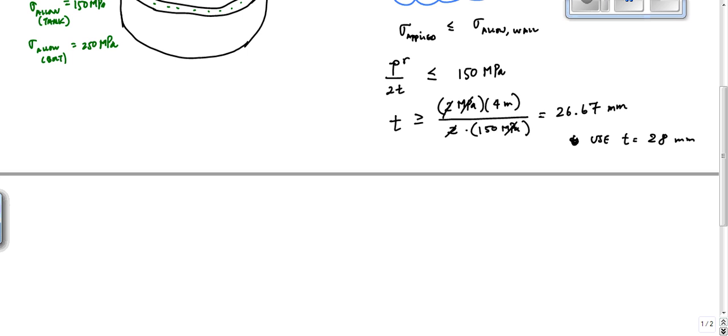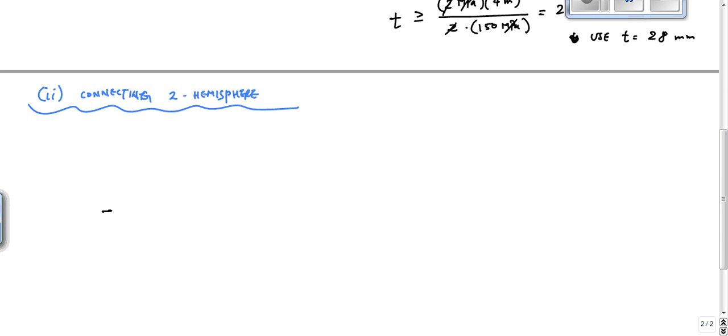So what we have is if I look at the cross section of my sphere, so now I want to look at the bolts connecting two hemispheres. So if I look at my cross section, I have here's that lip, I have my hemisphere, here's the lip, and then I have another lip, and then another hemisphere, like this. And the bolts go across right here, all the way around.